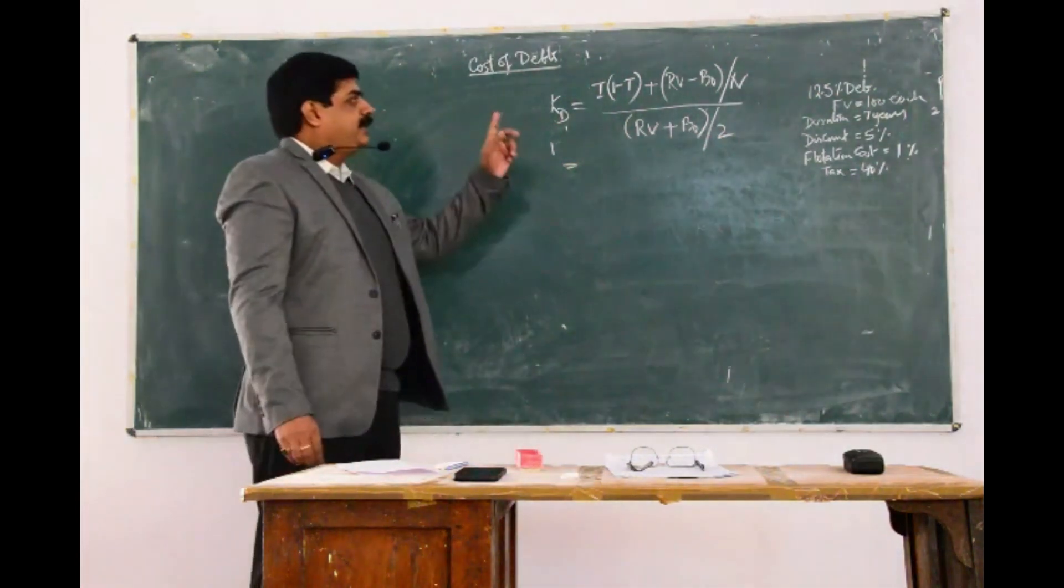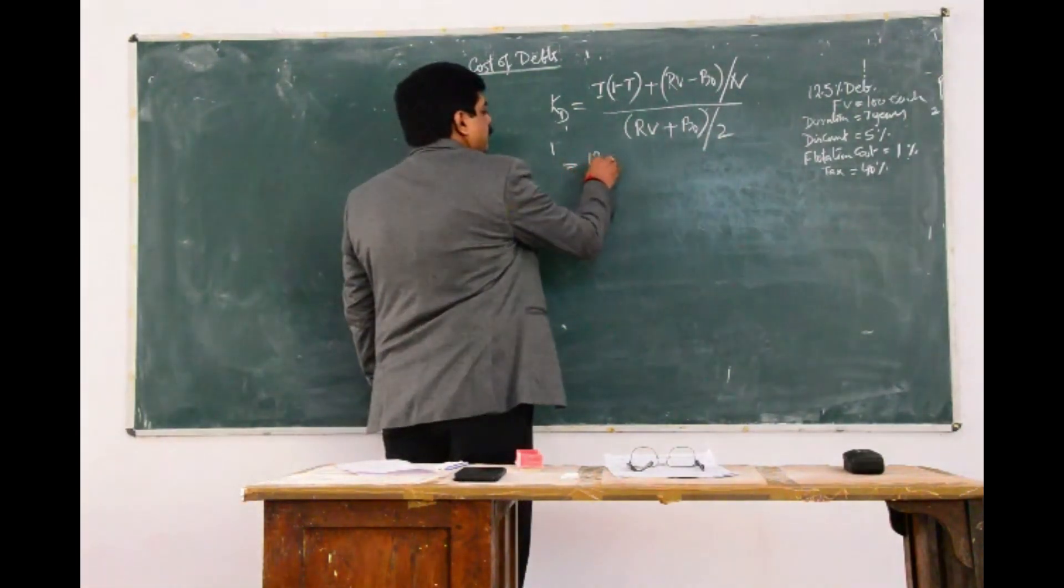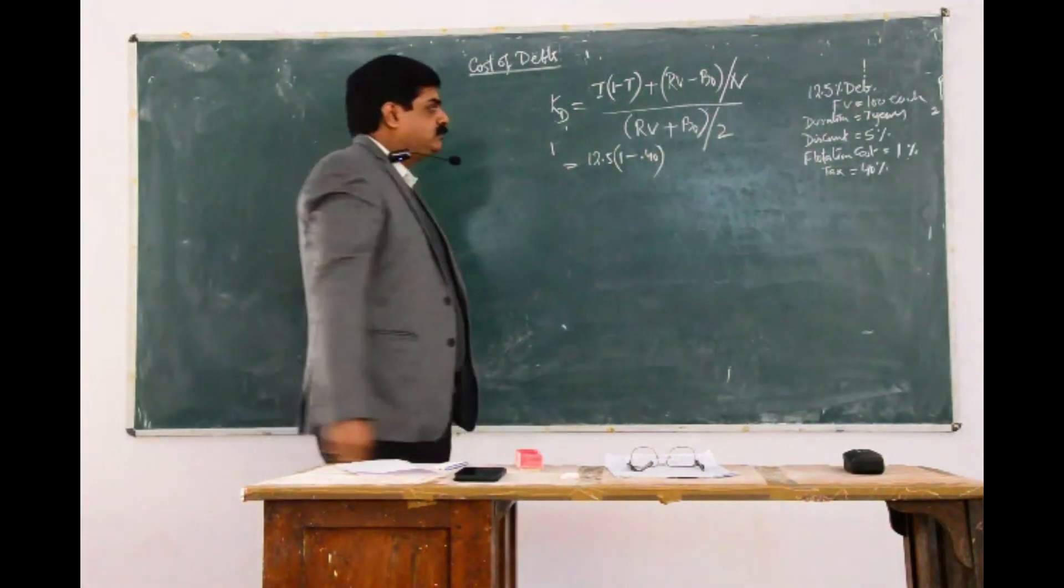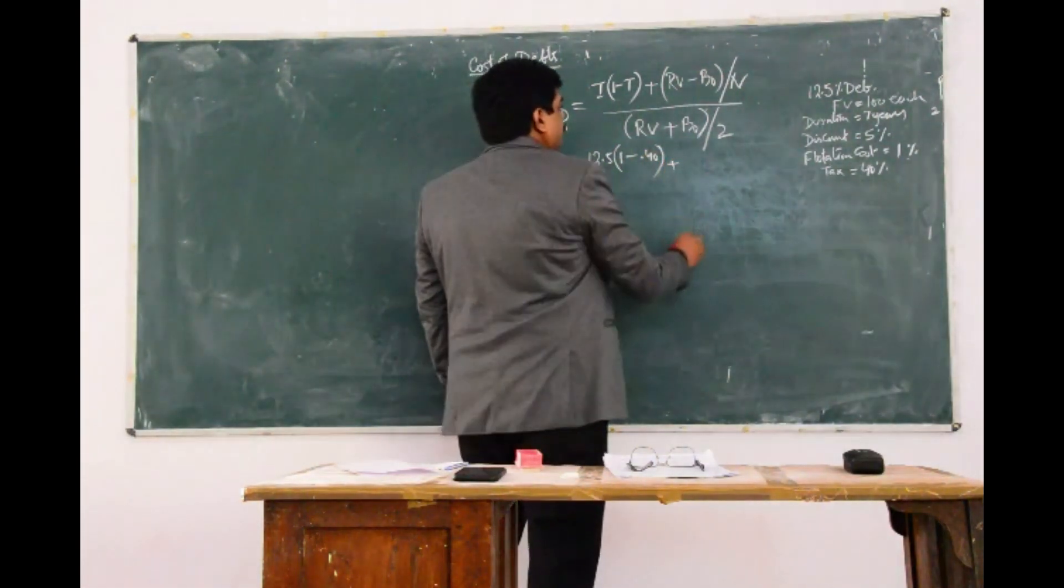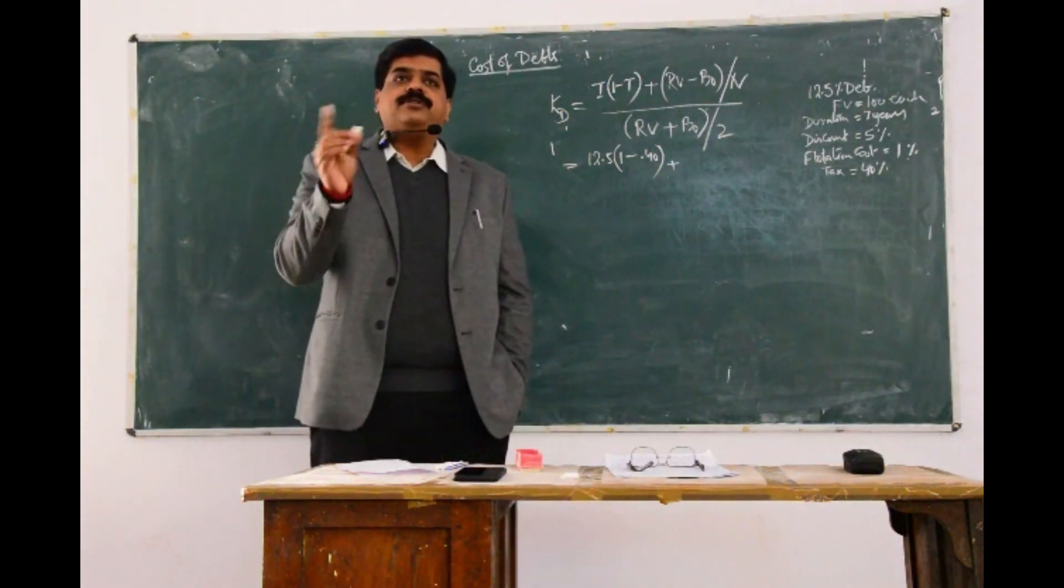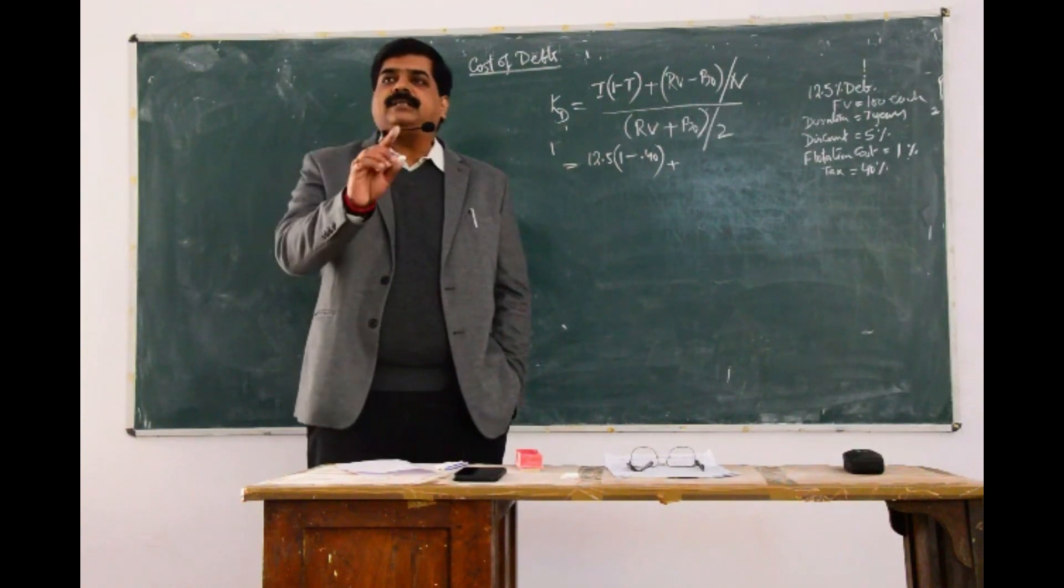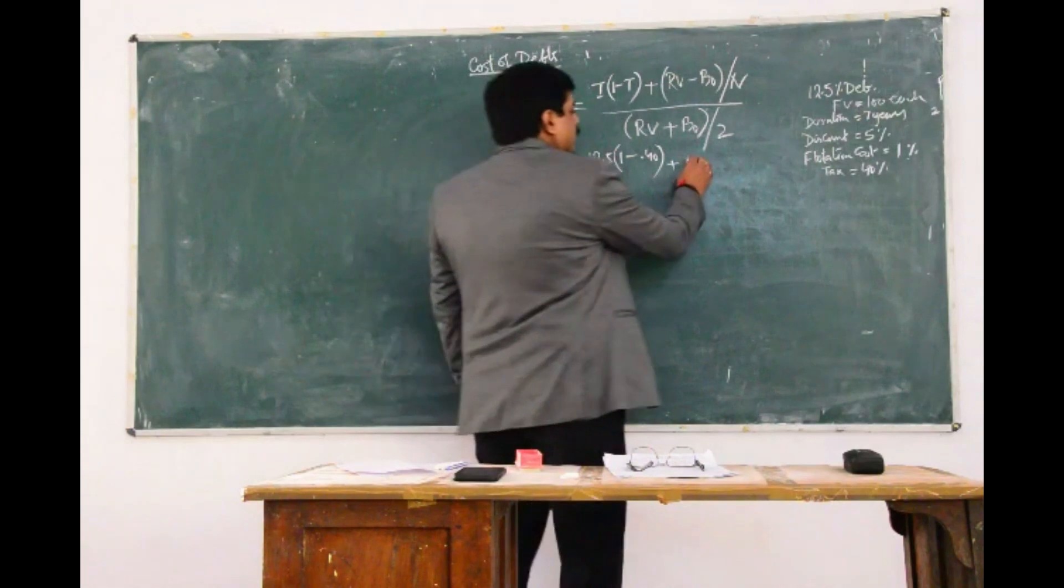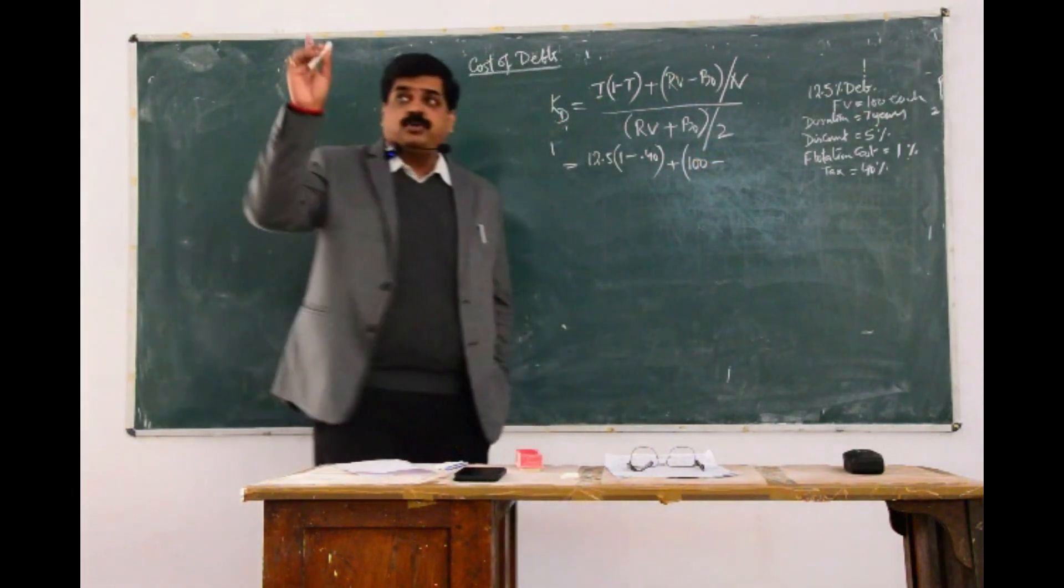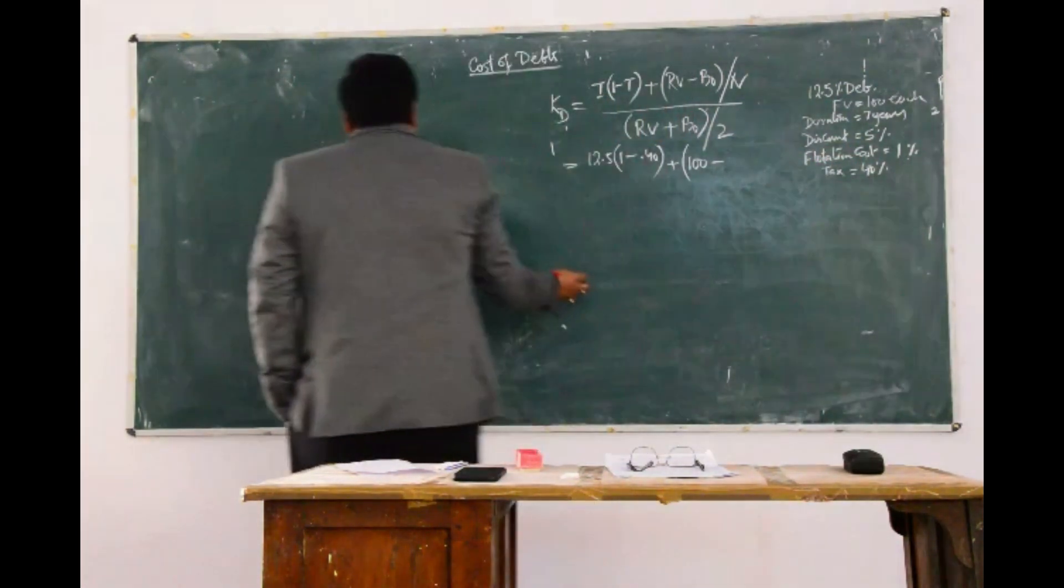Now, interest is 12.5, times (1 minus T), T is 40%, plus redemption value. Redemption value was not given, so we will assume that the face value will be considered as the redemption value, 100, minus issue price.